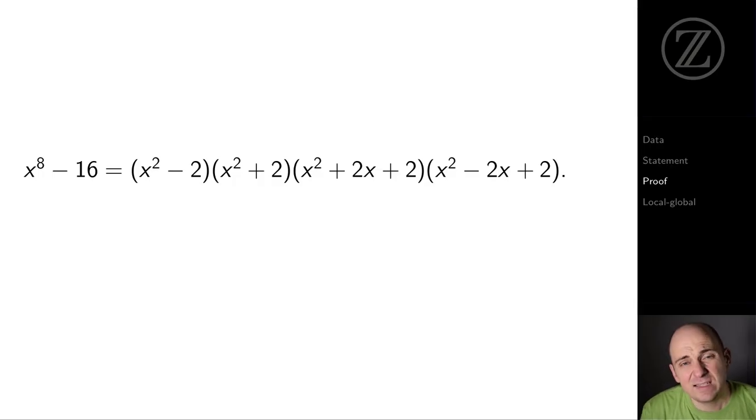We just saw that x to the 8th minus 16 factors as x squared minus 2 times x squared plus 2 times x squared plus 2x plus 2 times x squared minus 2x plus 2.